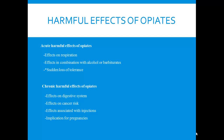Opiates can depress respiration and produce short jerky breaths. Alcohol and barbiturates also depress respiration, so combined effects could be very dangerous — potentially shutting down the respiratory centers of the brain. Sudden loss of tolerance is also an issue: if an individual takes the drug in the same location, the effects and tolerance become associated with that location, so if they take it in a new location, there could be a sudden loss of tolerance.